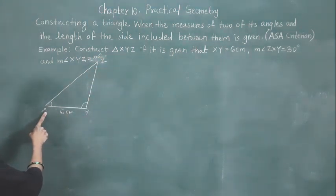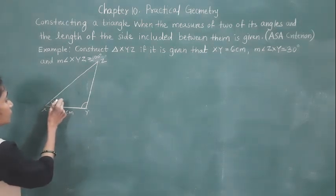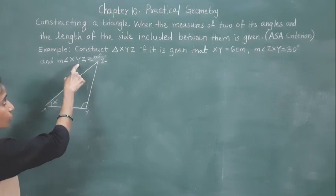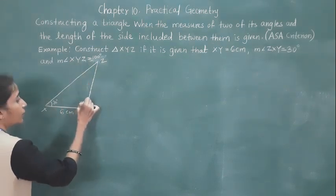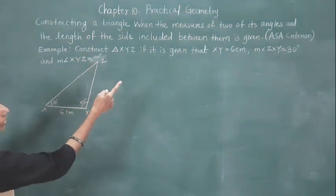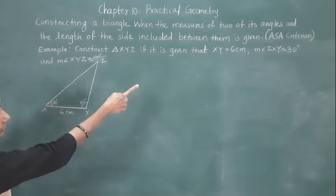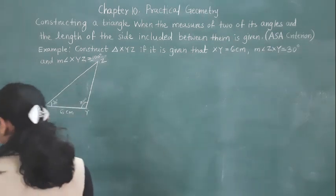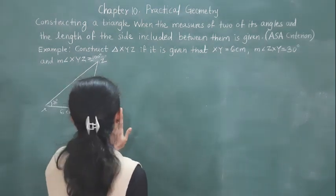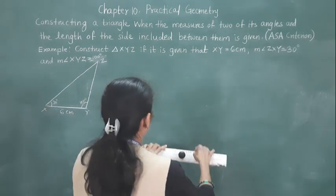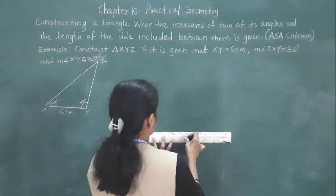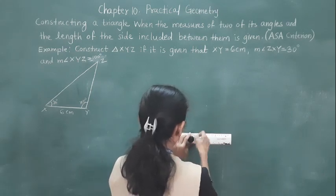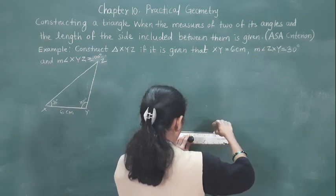Now what is given? Angle X is 30 degrees. Angle Y — angle XYZ — is 100 degrees. Angle ZXY is 30 degrees. And side XY is 6 centimeters. So let's construct the triangle. First, we are going to draw line segment XY of 6 centimeters.